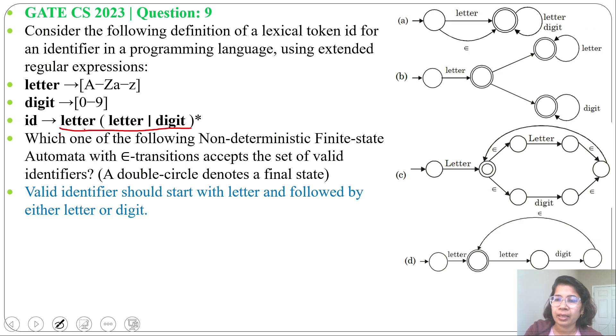Now check option A. Option A, we can start with either letter or epsilon. Then here any combination of letter or digit. So regular expression will be letter plus epsilon, then letter plus digit whole Kleene closure.